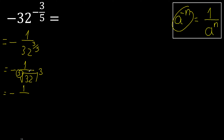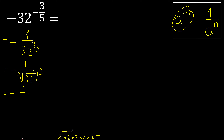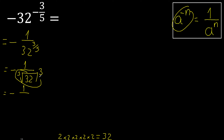5 equal numbers that multiply is 32. 5 equal numbers multiply: 2 multiplied by 2 is 4, multiplied by 2 is 8, multiplied by 2 is 16, multiplied by 2 is 32. Ok, equal — therefore this is 2 to the exponent 5.